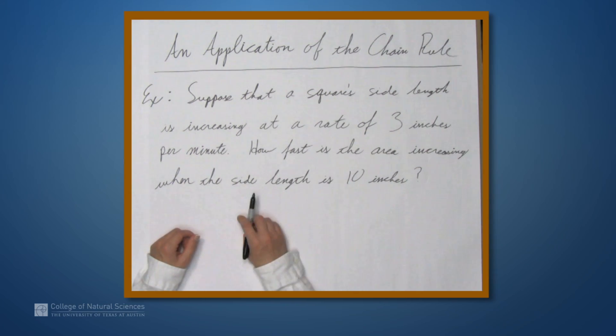So let's start right out with an example. Suppose that a square's side length is increasing at a rate of 3 inches per minute. We want to find how fast the area is increasing when the side length is 10 inches.